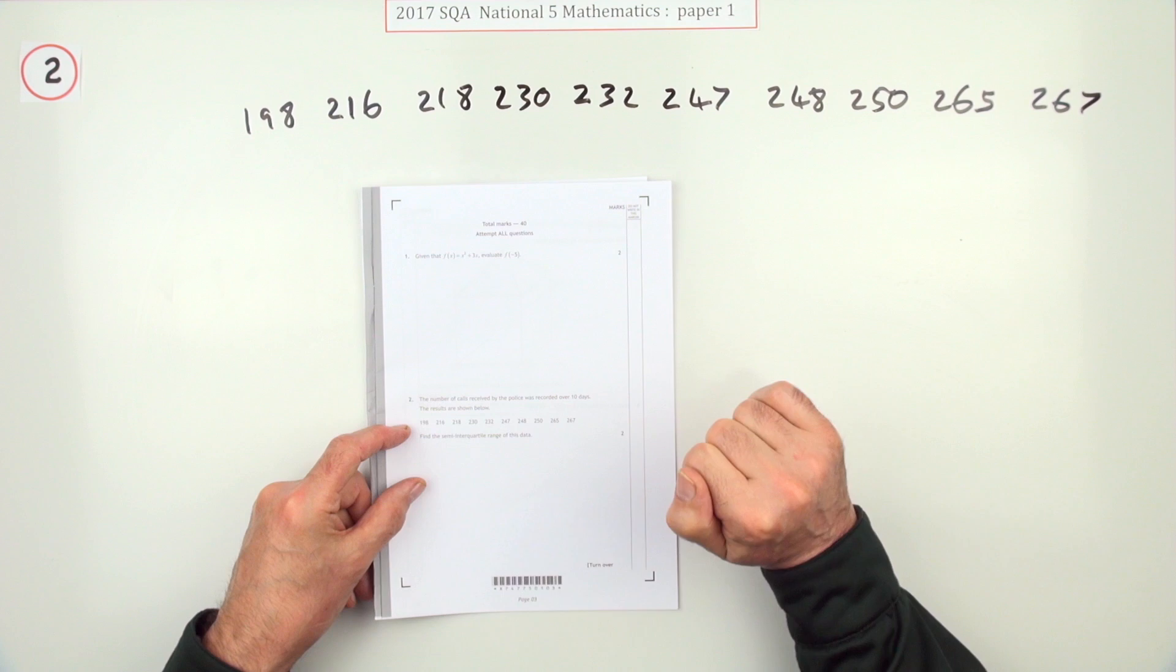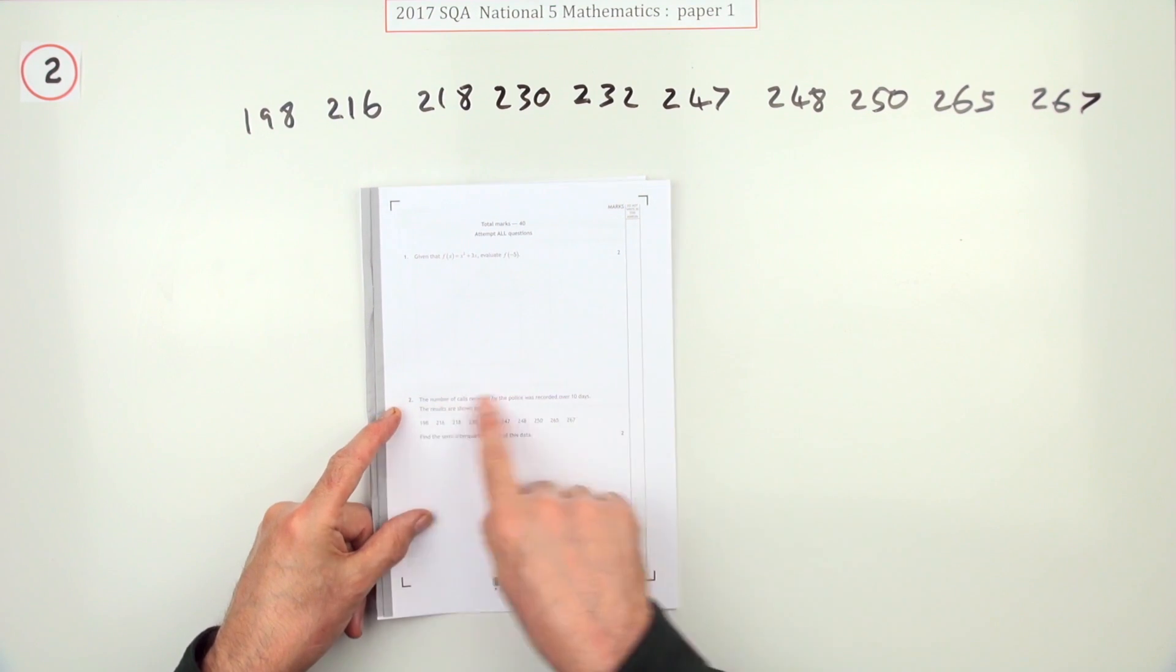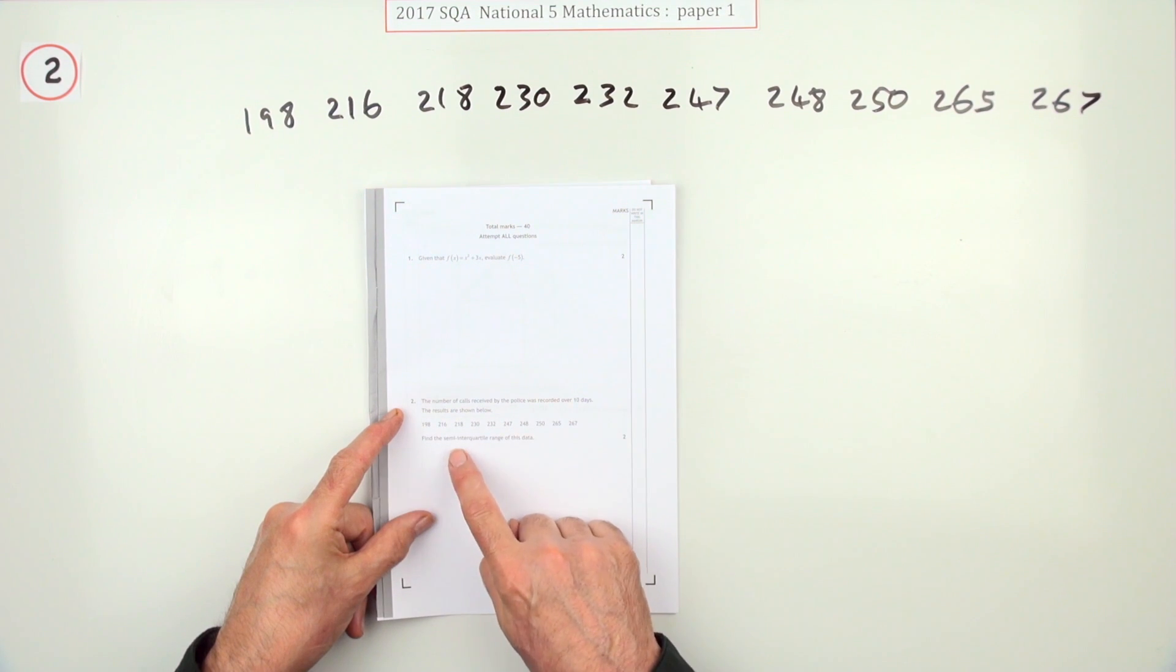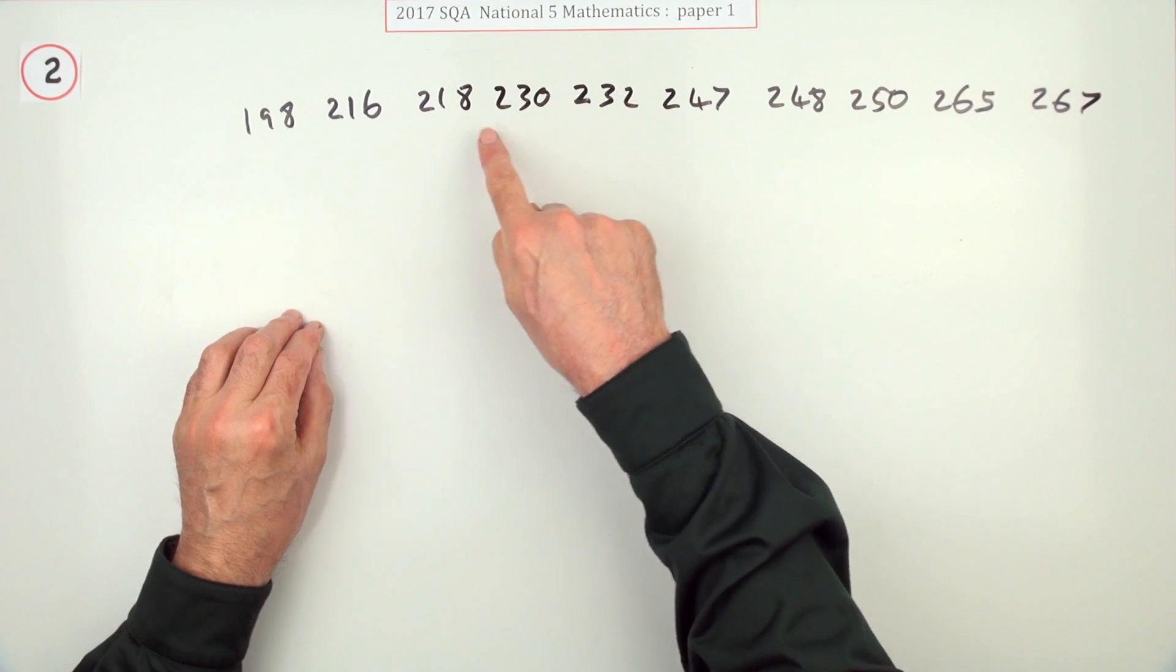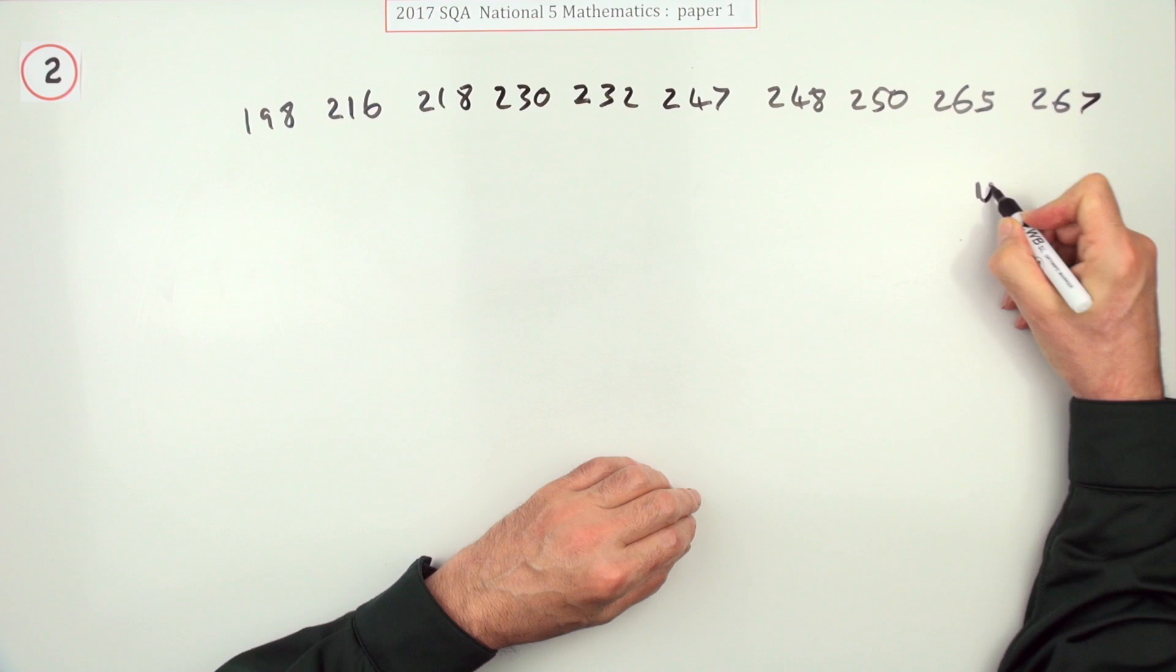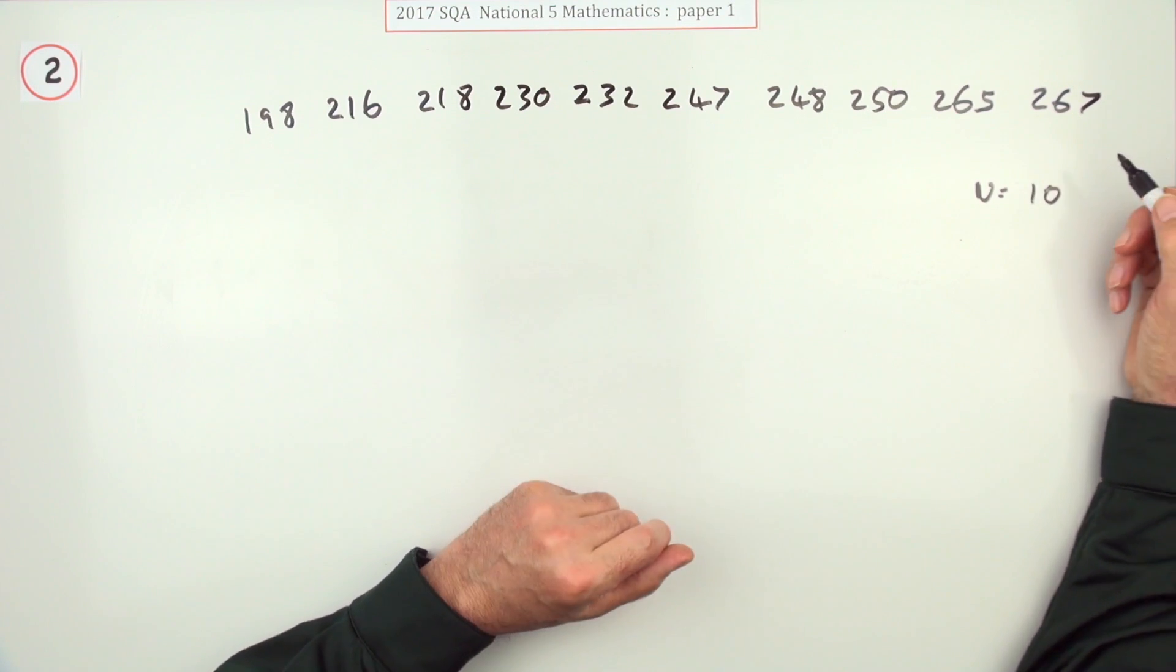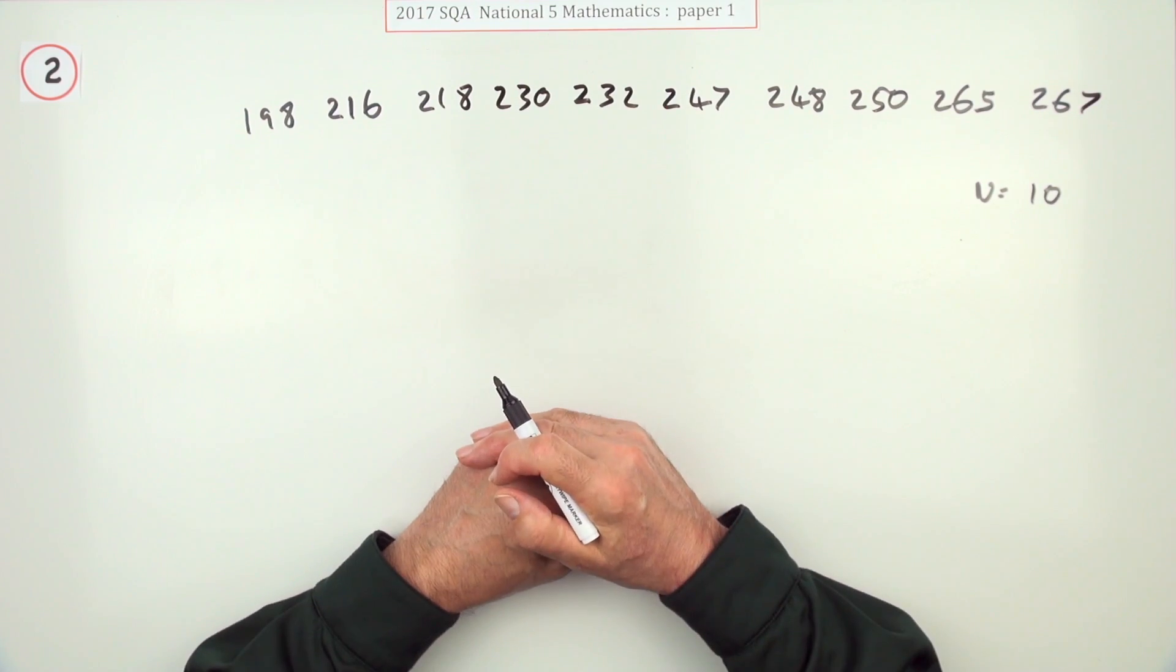Number two, semi-interquartile range here. Essentially you've got these numbers and you need to find the semi-interquartile range of them. Well, first of all, how many numbers are there? 1, 2, 3, 4, 5, 6, 7, 8, 9, 10. 10 numbers splits into exactly 5 and 5. There's a couple of ways you could do it, but when the numbers are small you can just do it by counting through them.